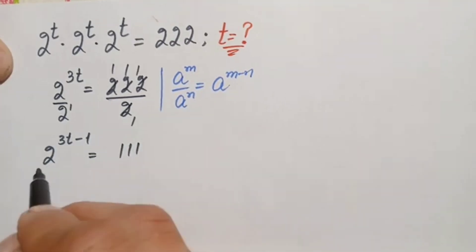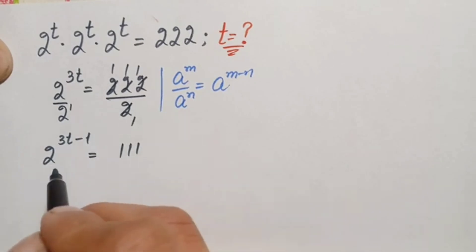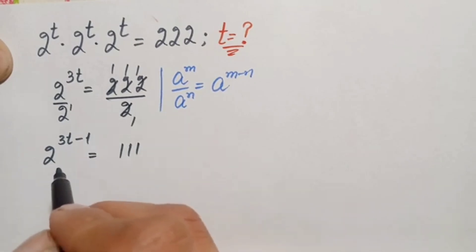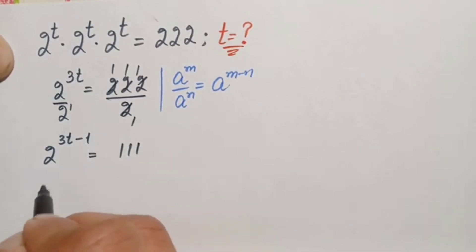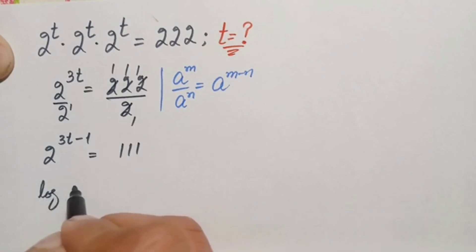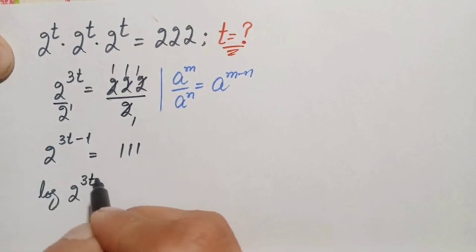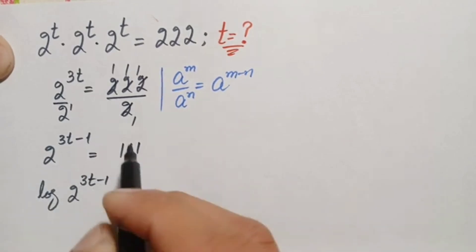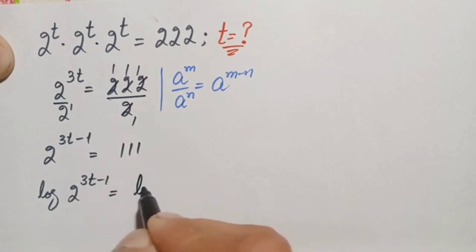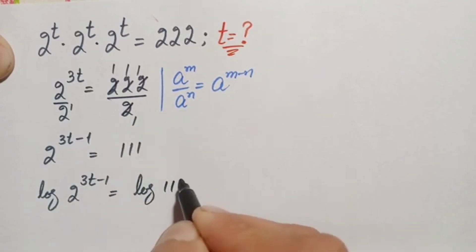These two numbers are different and are not easily divisible, so here we will take the common log on both sides. This will become log of 2 raised to the power (3t minus 1) is equal to log of 111.